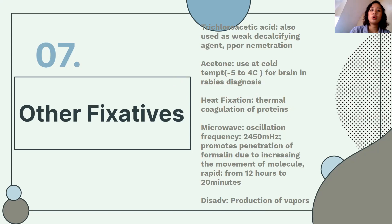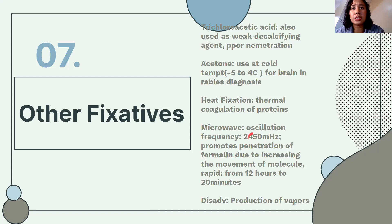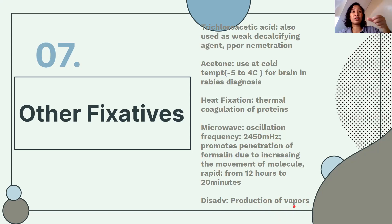Microwave processing: it uses a temperature of 65 degrees Celsius with an oscillation frequency of 2,450 MHz. It promotes penetration of formalin and increases turnaround time — reducing processing from 12 hours to 20 minutes. However, you must be careful: microwave processing produces harmful vapor, so once opened, the microwave should be placed in a fume hood.